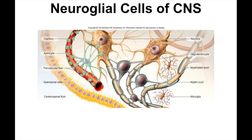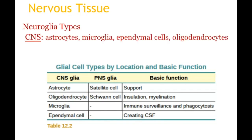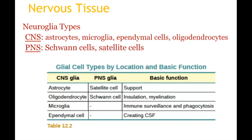Now let's look at neuroglia. The organization in the textbook chart wasn't ideal for memorizing, so here's a different way to think about it: in the central nervous system you have four types of cells with more complex names, reflecting that complexity. In the peripheral nervous system you just have two cells — both starting with S: Schwann cells and satellite cells. Keeping that straight will help on multiple choice — if asked which cell is not found in the peripheral nervous system, you know the two S cells belong there.